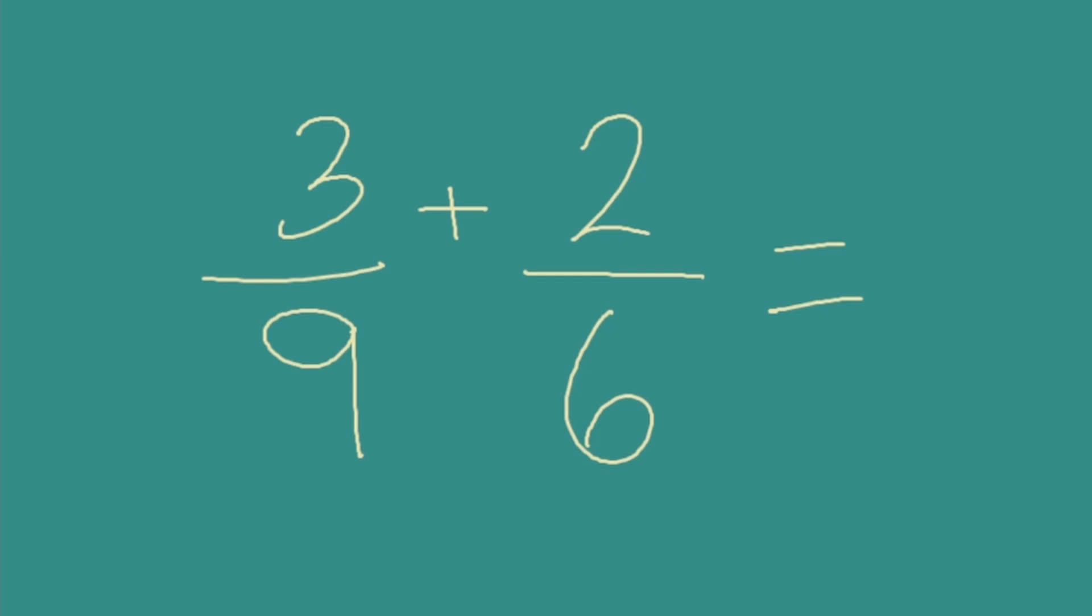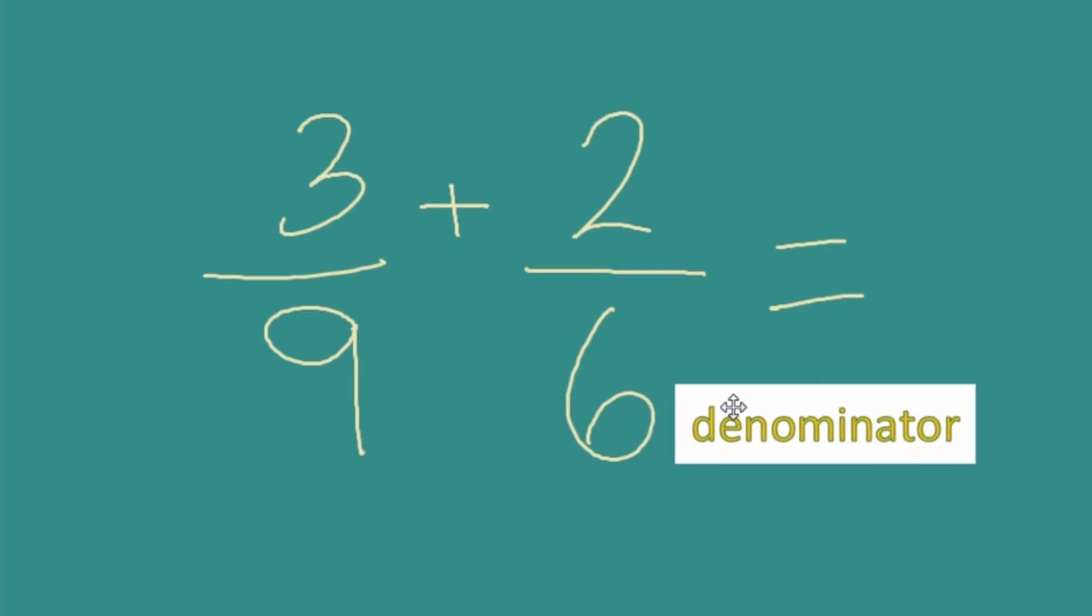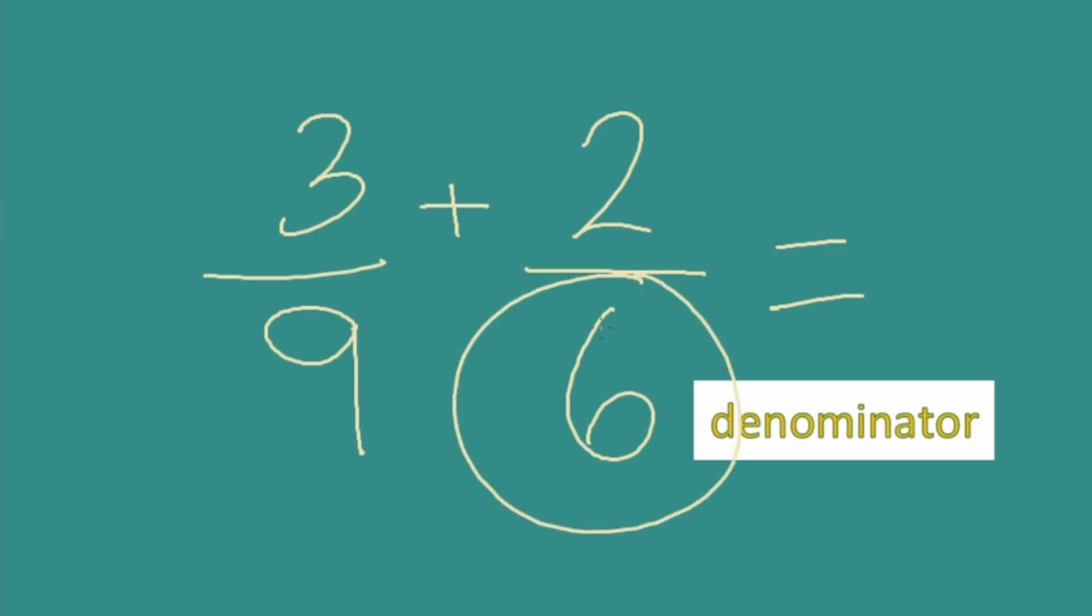So first off, what is a denominator? Well, the denominator is the bottom number of a fraction. I want to pull this guy down here so you can see how it's spelled. That's the word denominator. And we have a denominator right here, this digit on the bottom. Six is the denominator as well as nine.